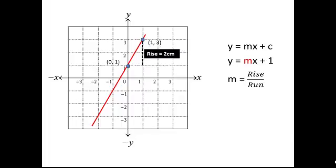We can see that the vertical distance, or rise, between these two points is 2cm, and the horizontal distance, or the run, is 1cm.